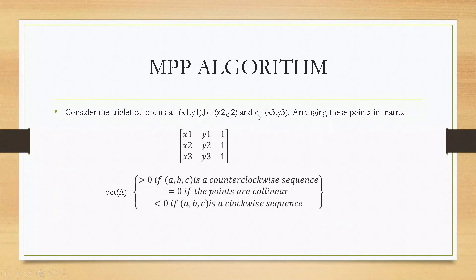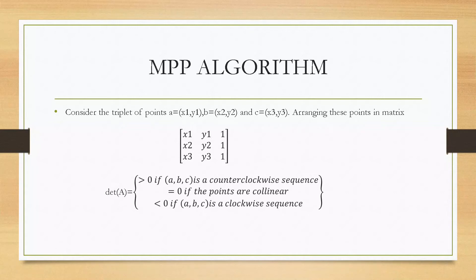We will formulate some mathematical equations to understand this algorithm. Consider the triplet of points A, B, and C. Arrange these points in the matrix as shown. The determinant of A is given. If it is greater than 0, the points A, B, C form a counter-clockwise sequence. If it is less than 0, A, B, C is a clockwise sequence. If they are collinear, it is equal to 0.